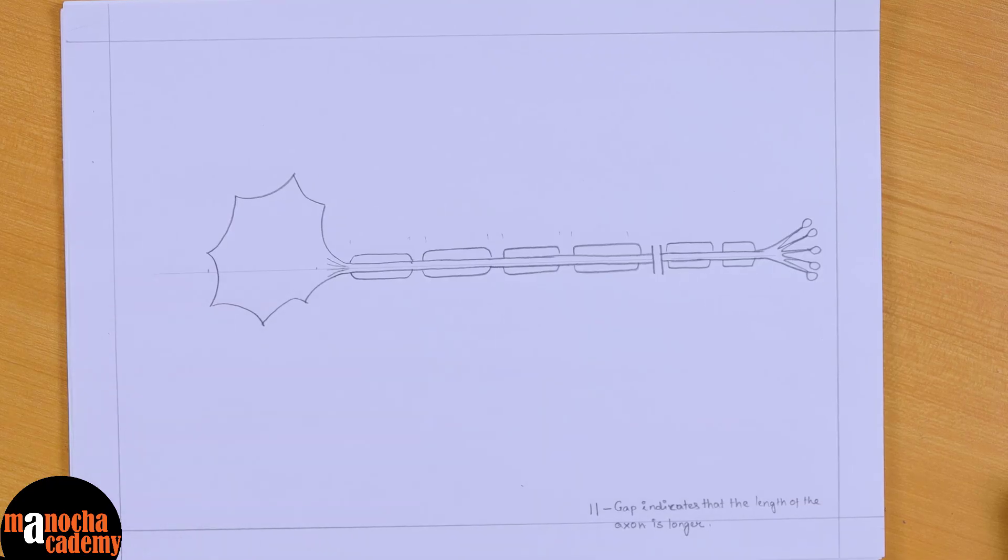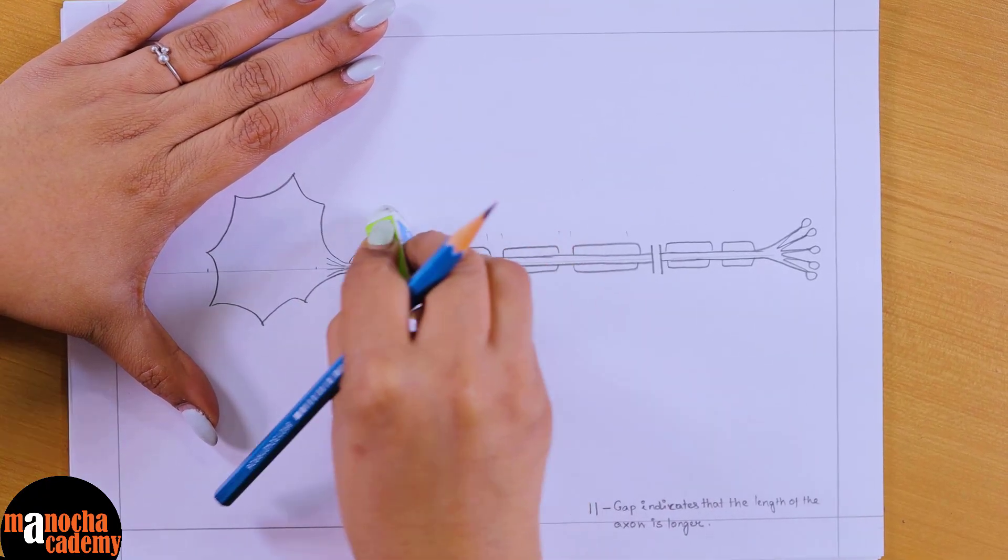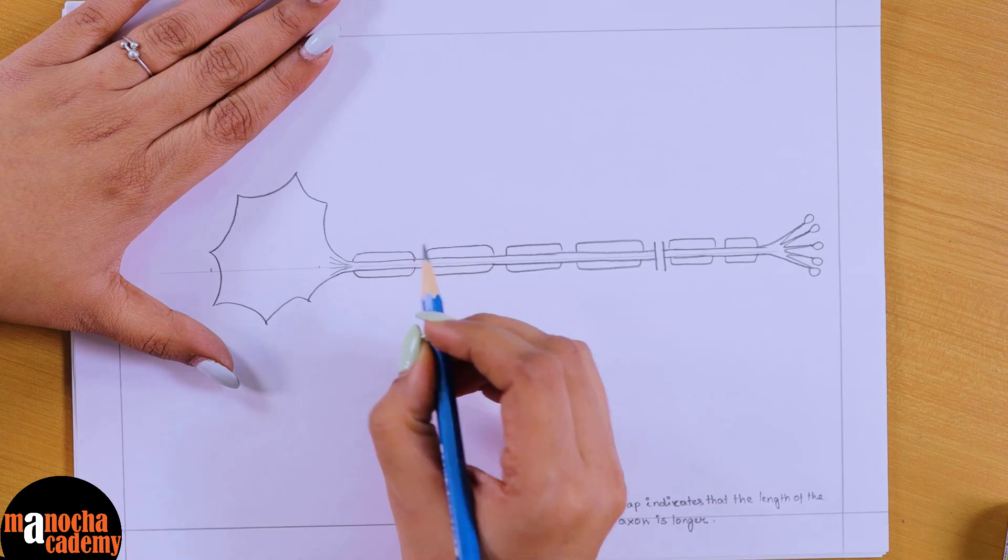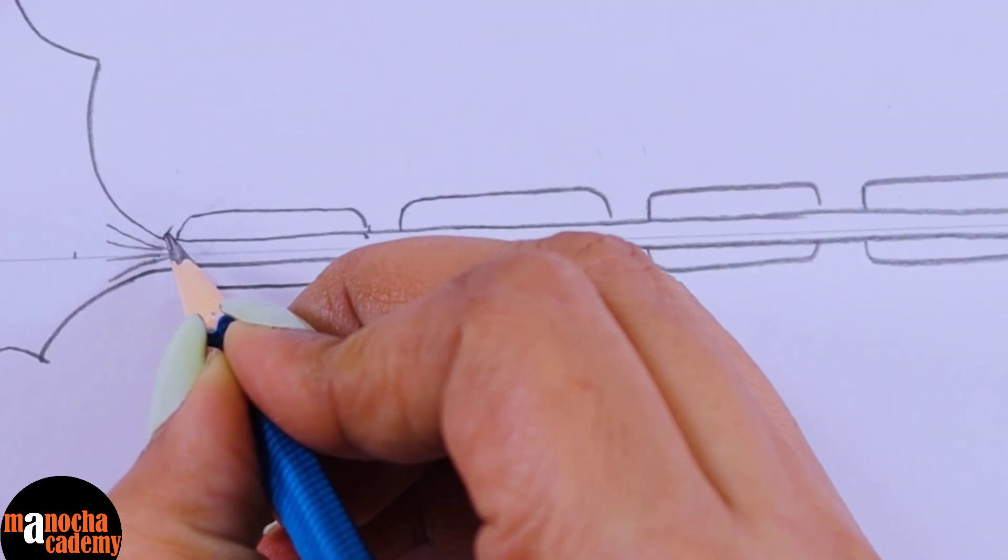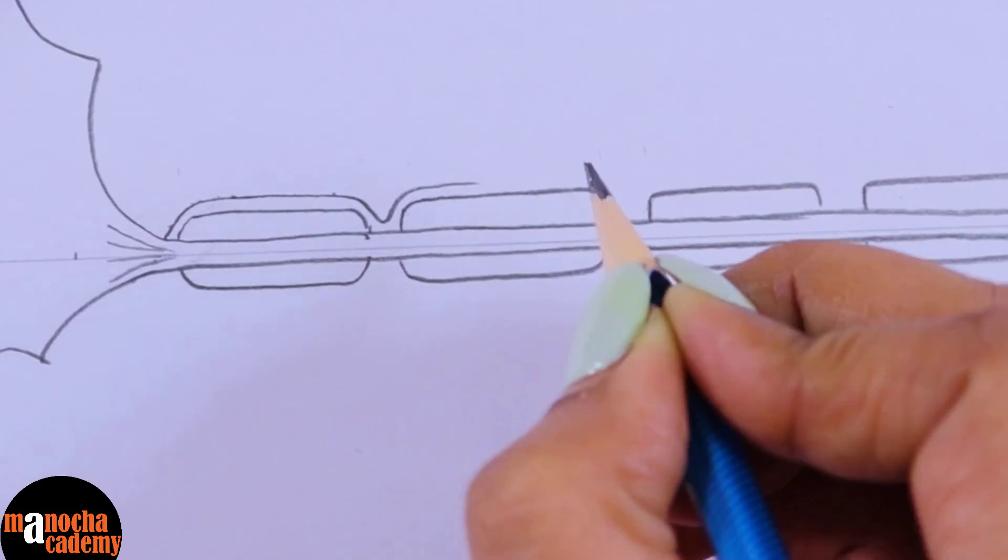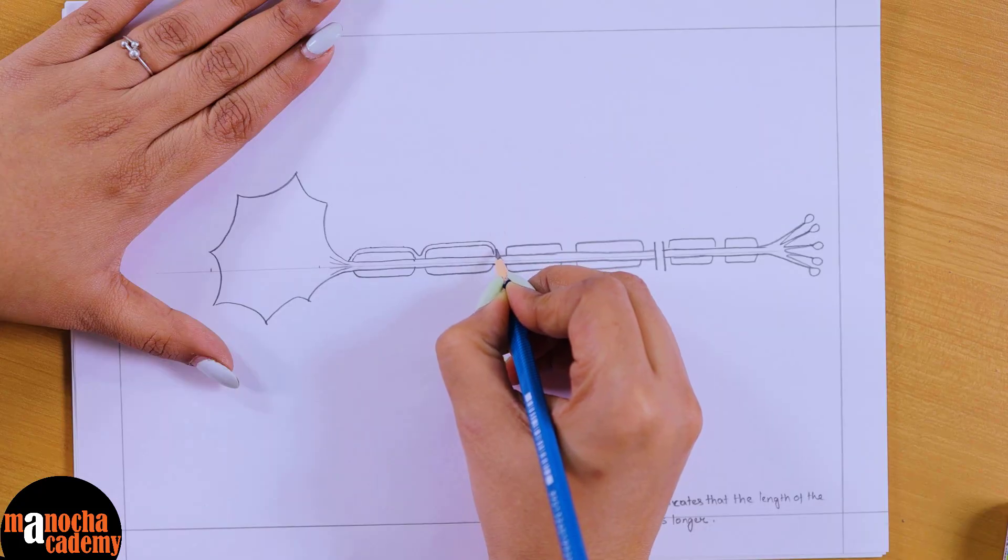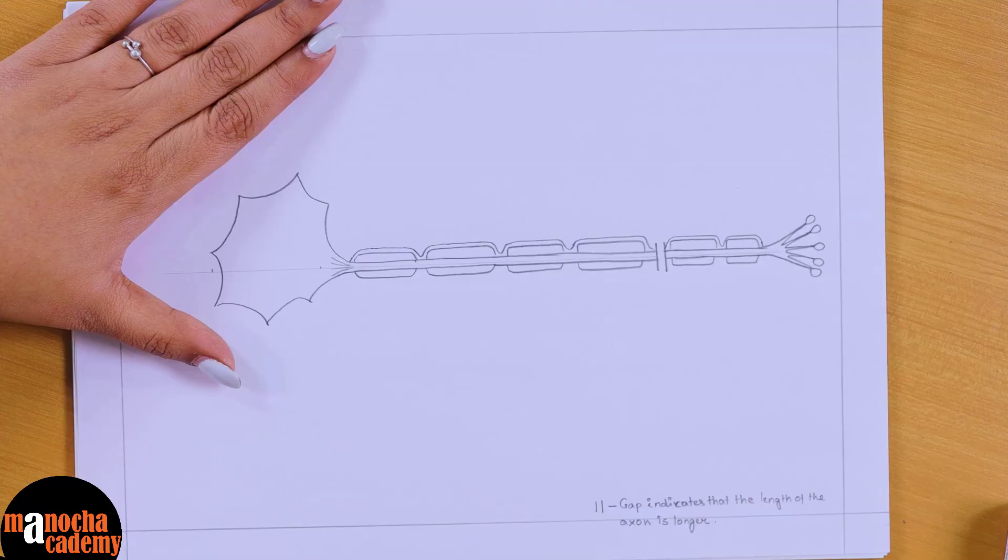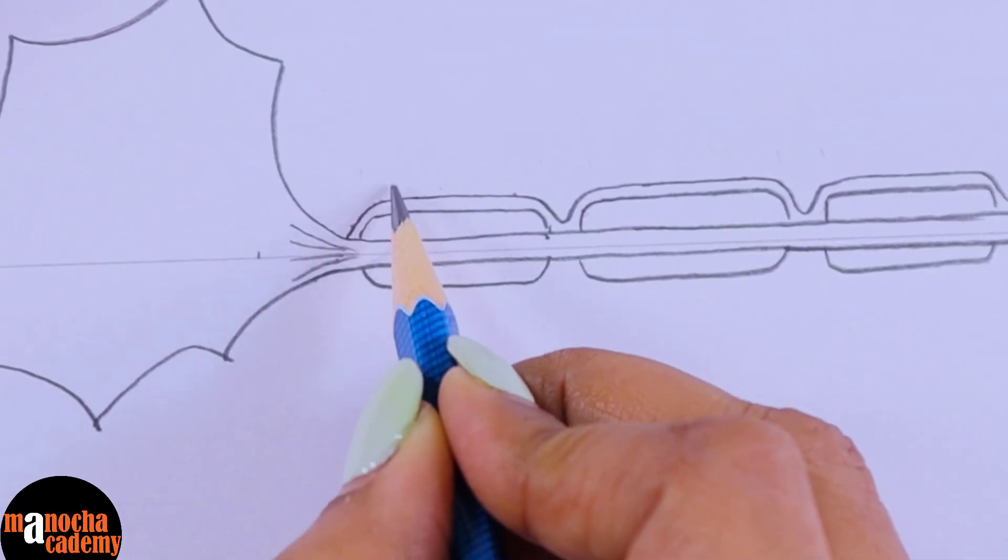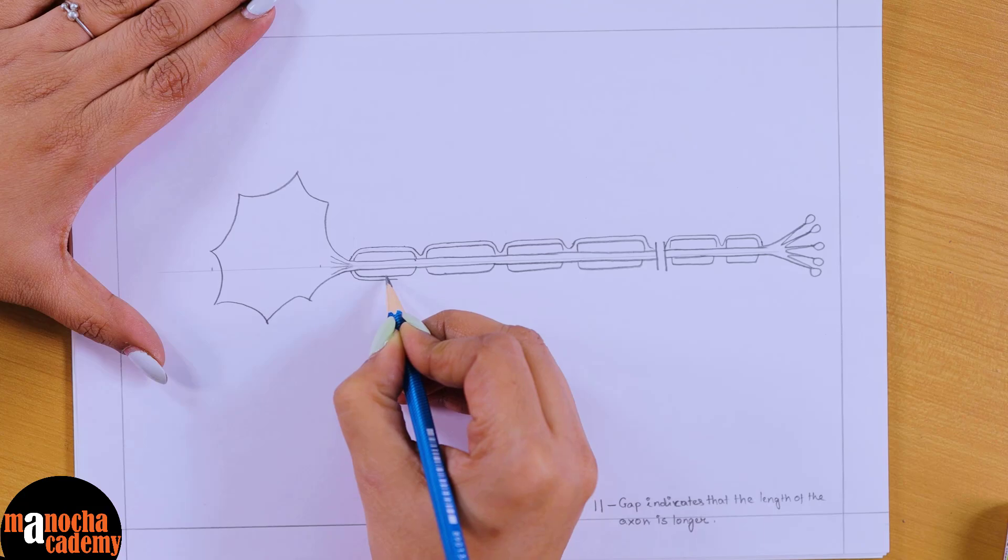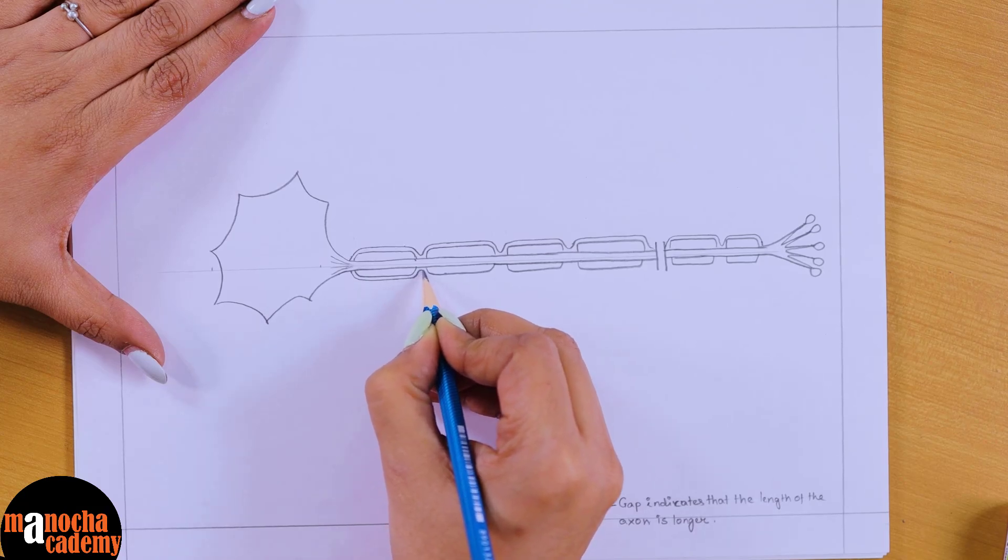But before that I'll erase these reference lines and I'll draw the neurilemma. Now for the neurilemma, it is continuous in these gaps as well. So we'll keep the neurilemma parallel to the myelin sheath, but in these gaps they are present. As you can see, I am trying to keep the neurilemma as parallel to the myelin sheath as possible. Do not make one part very wide in diameter and another part very narrow in diameter. So you should try to maintain this diameter, this distance between the myelin sheath and the neurilemma, all over.